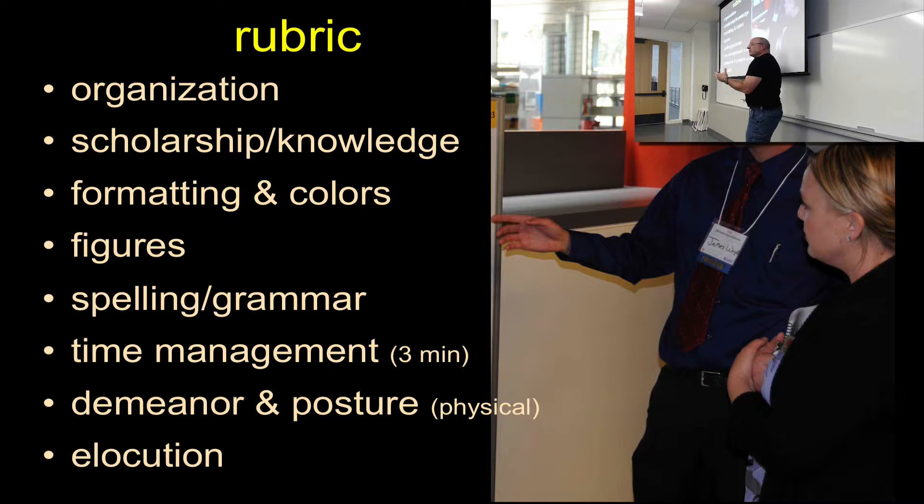Number three is just general logistics. So are you using orange and green, that kind of stuff? Or is it actually colors and sizes that are easy to read in the back of the room and easy to read by everyone? Figures, good job with your figures, is it properly labeled? If you have error bars, the error bars tell us what it is, that kind of stuff. Spelling and grammar is obvious, we don't want to have any of those errors.